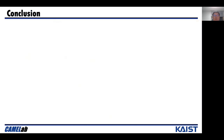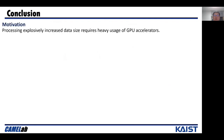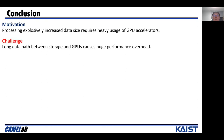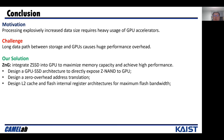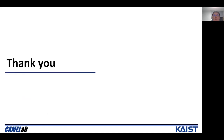In conclusion, processing explosively increasing data requires heavy usage of GPU accelerators. However, long data paths between storage and GPUs cause huge performance overheads. We propose ZNG, which integrates the SSD into the GPU to maximize memory capacity and achieve high performance. Our evaluation results show that ZNG can improve performance by 7.5 times compared to prior work. Thank you very much for your attendance.